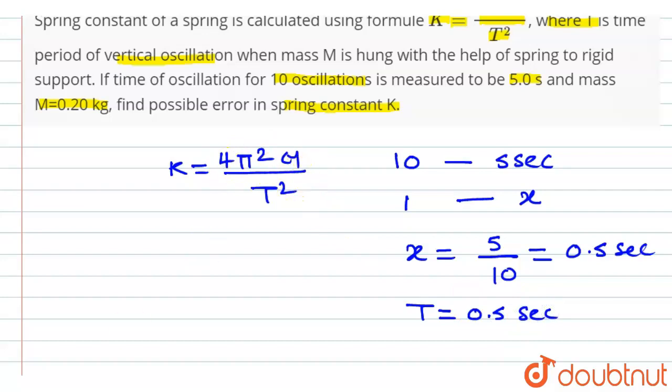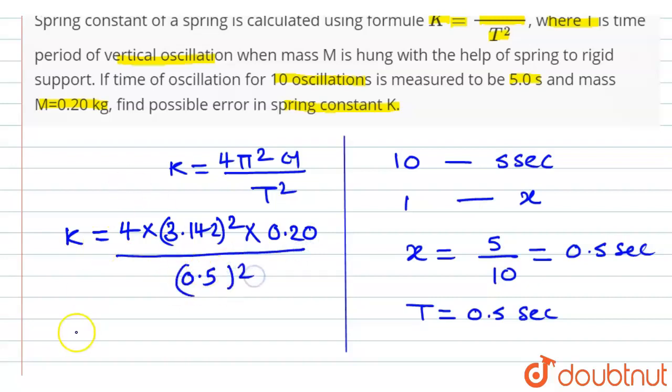Putting this value in our equation, here K is equal to 4 into π² that is 3.142 squared into the value of mass that is 0.20 divided by T² that is 0.5 squared. On solving this, we get the value of K as 31.54.